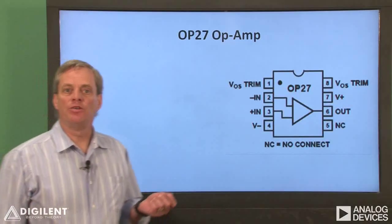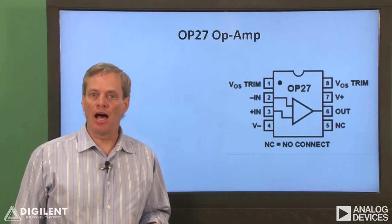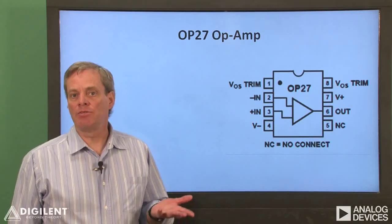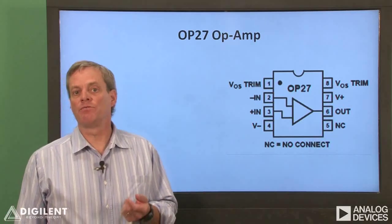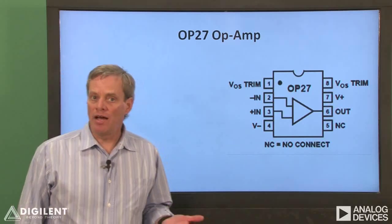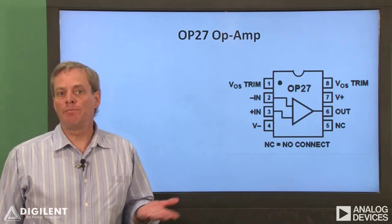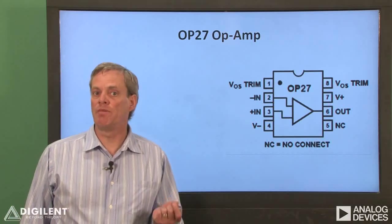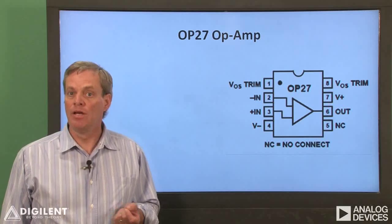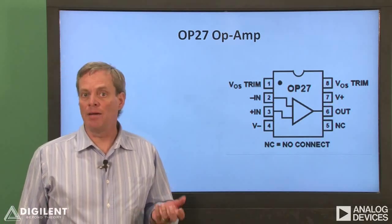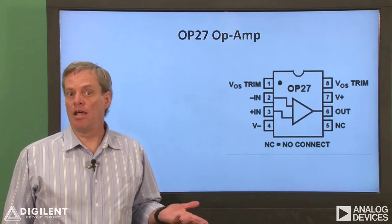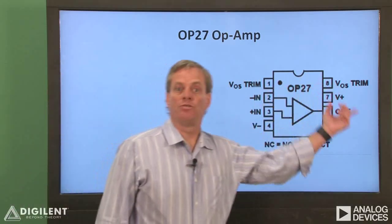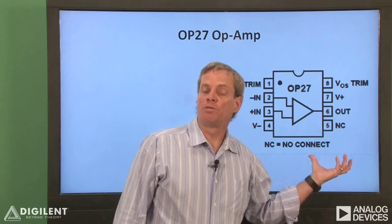All the labs in this chapter specify use of the OP27 op-amp from the Digilent Analog Parts Kit, so I want to spend a little time talking about the physical pin descriptions for that operational amplifier. The general comments I'll make for this op-amp will be typical for most operational amplifiers, but the specific pin descriptions may vary from op-amp to op-amp. In order to find the pin descriptions for any given op-amp, simply look up a datasheet online — one of the first pieces of information on the sheet will generally be a picture with a description of the pin functions.